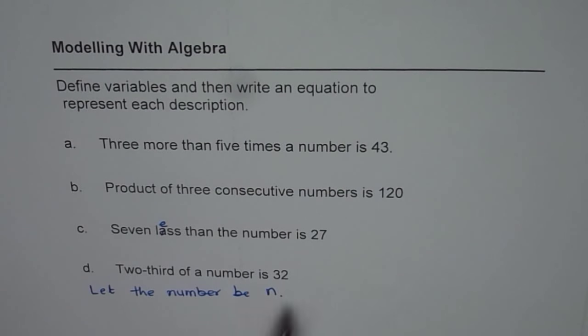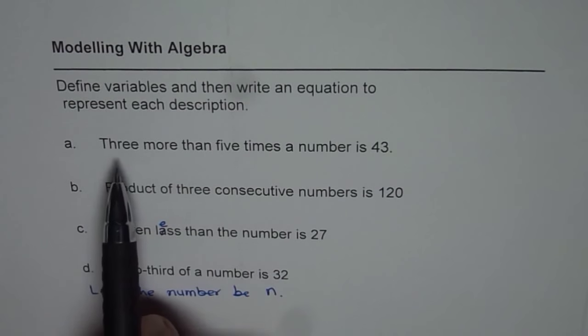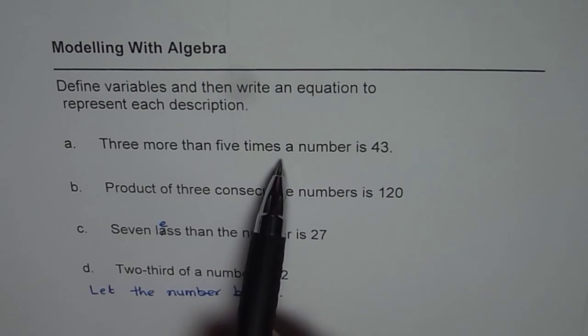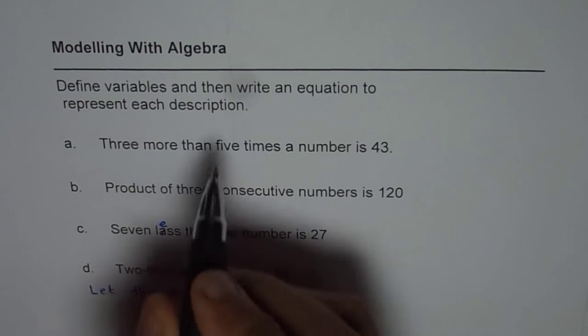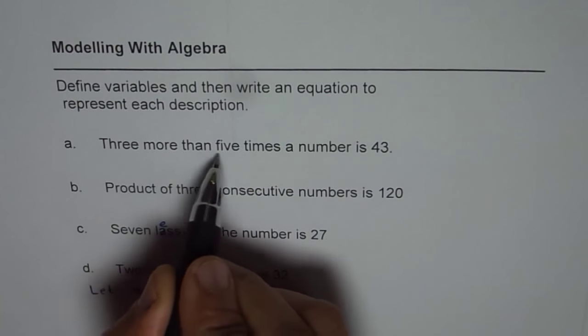That could be any number. 3 more than 5 times a number is 43. So that means 3 more than 5 times. So what is 5 times the number? 5n.